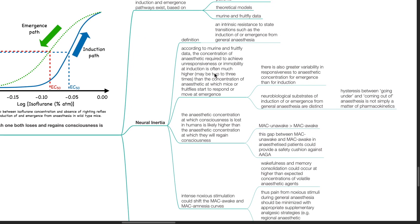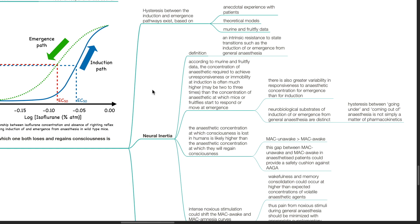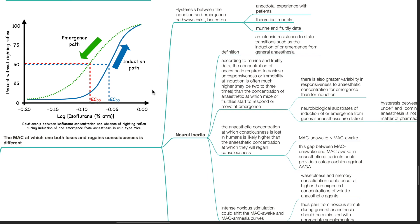Neuroinertia is defined as the intrinsic resistance to state transitions such as the induction of or emergence from general anesthesia. According to murine and fruit fly data, the concentration of anesthetic required to achieve unresponsiveness or immobility at induction is often much higher and may be 2 to 3 times higher than the concentration of anesthetic at which mice or fruit fly start to respond or move at emergence.